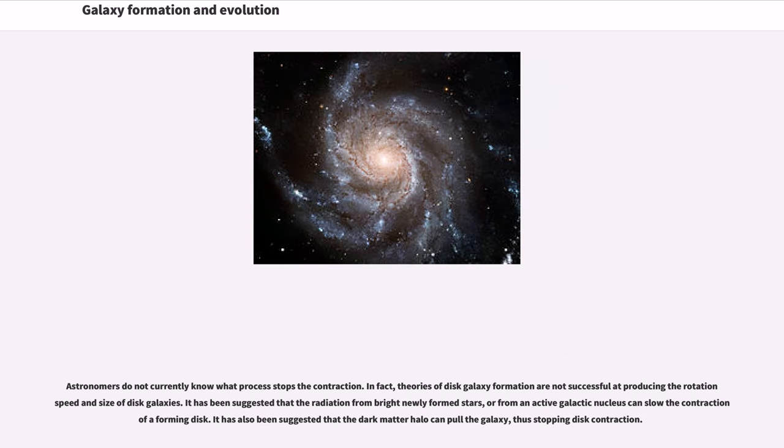Astronomers do not currently know what process stops the contraction. In fact, theories of disk galaxy formation are not successful at producing the rotation speed and size of disk galaxies. It has been suggested that the radiation from bright newly formed stars, or from an active galactic nucleus, can slow the contraction of a forming disk. It has also been suggested that the dark matter halo can pull the galaxy, thus stopping disk contraction.